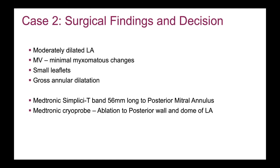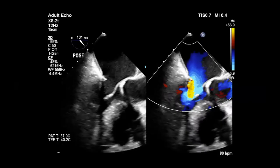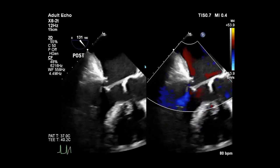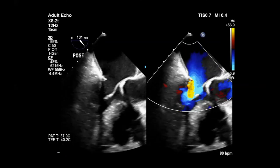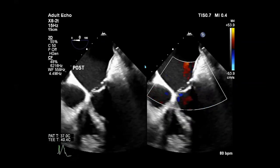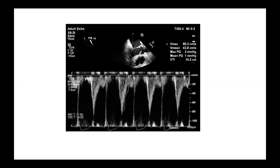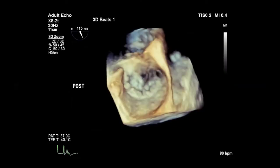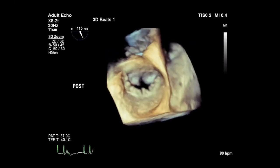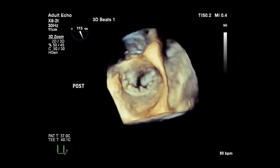The decision was to repair with a Simulus band 56 millimeters long to the posterior mitral annulus and perform a maze procedure — cryoablation to the posterior wall and the dome of the LA to treat the AFib. Post-op, you can see the mitral valve has been repaired. The posterior leaflet is fairly mobile and the anterior leaflet is coming up to meet it, with no further mitral regurgitation. There's very little gradient across the valve. The 3D en-face view of the band shows the fibrous trigone to fibrous trigone connection is pretty intact — compare this to the first case.